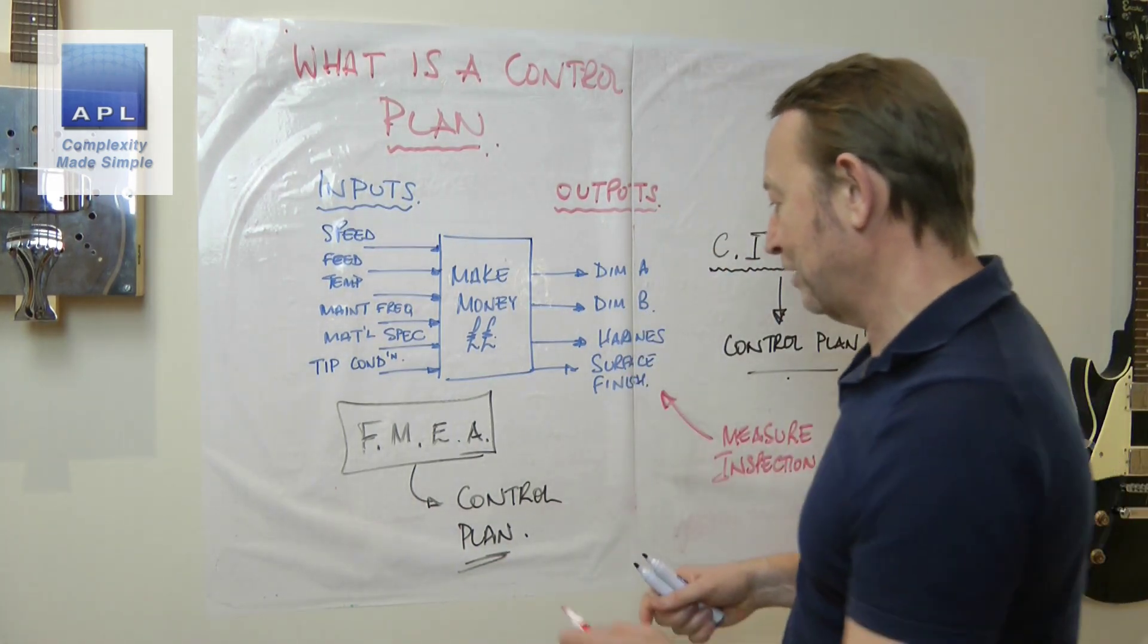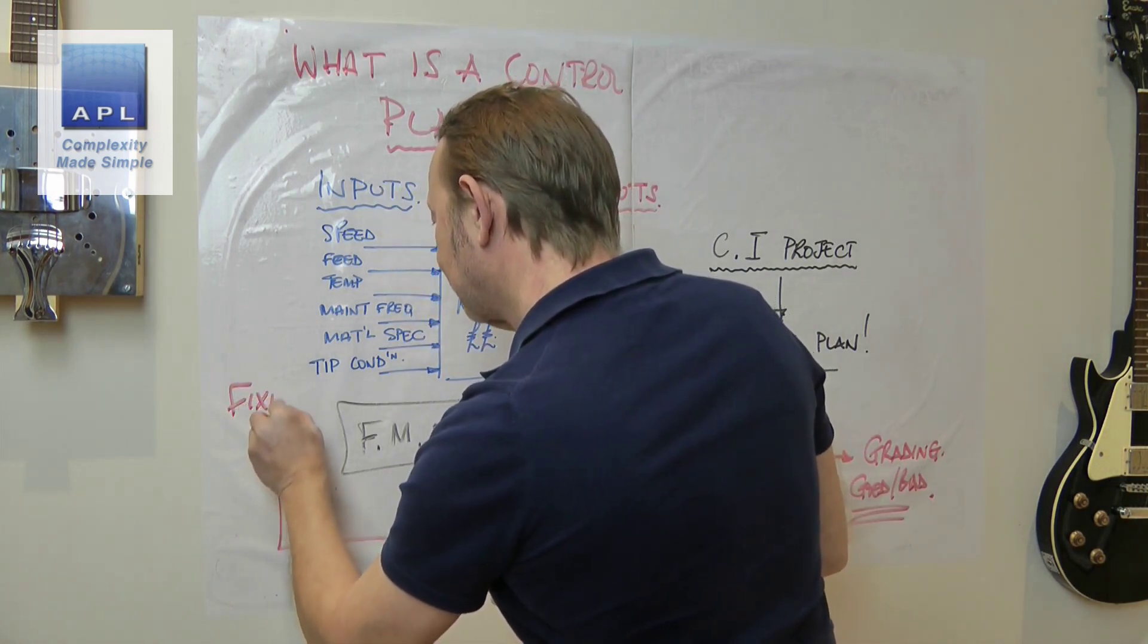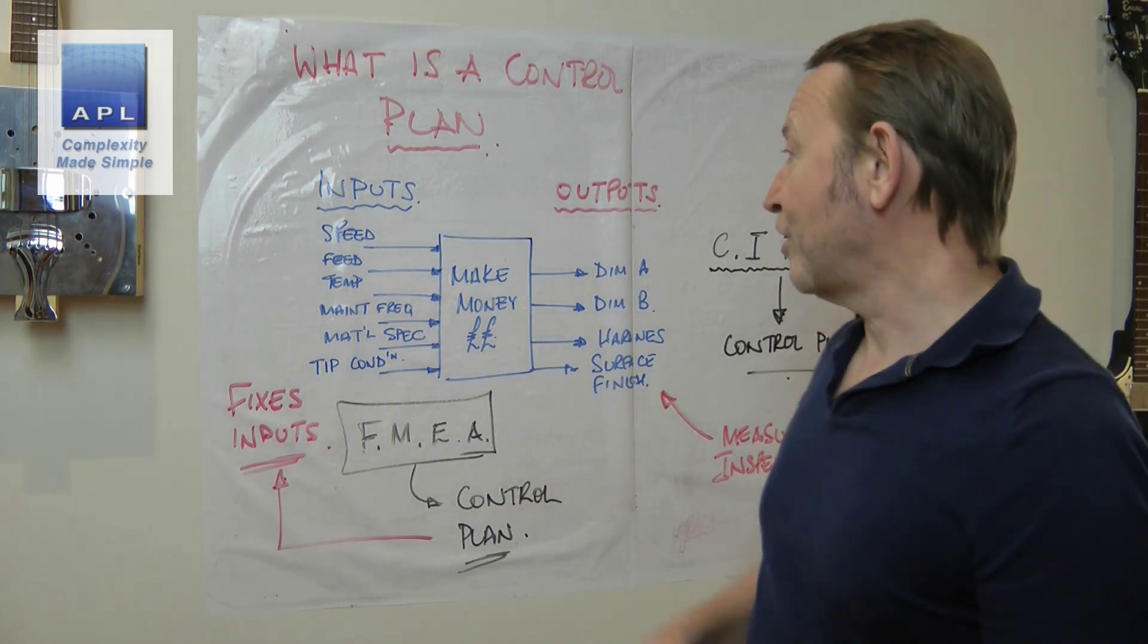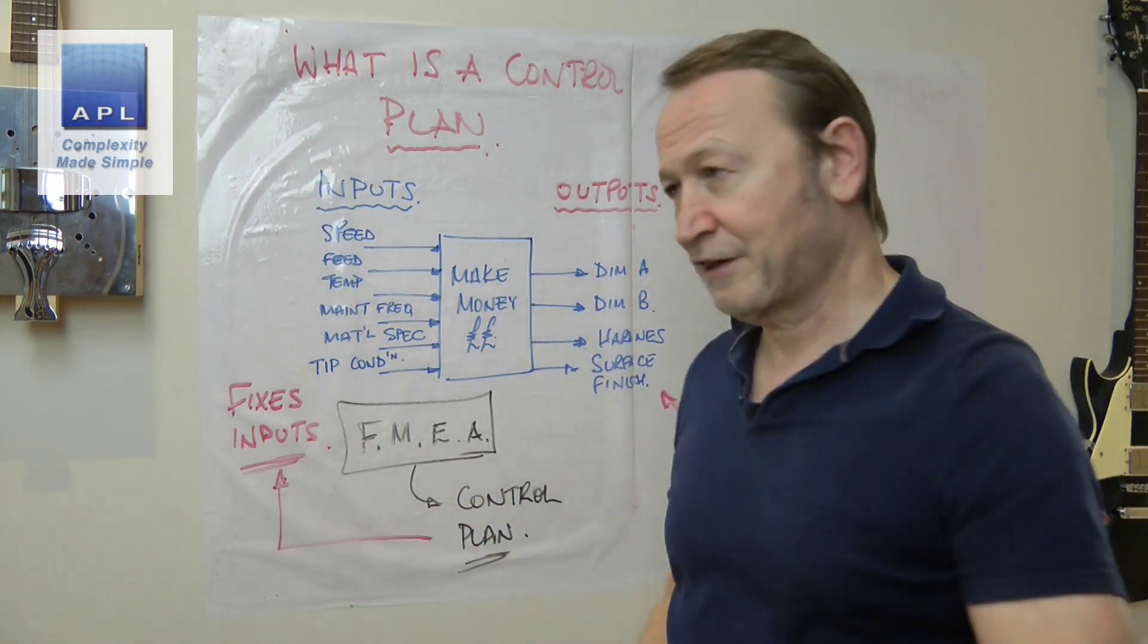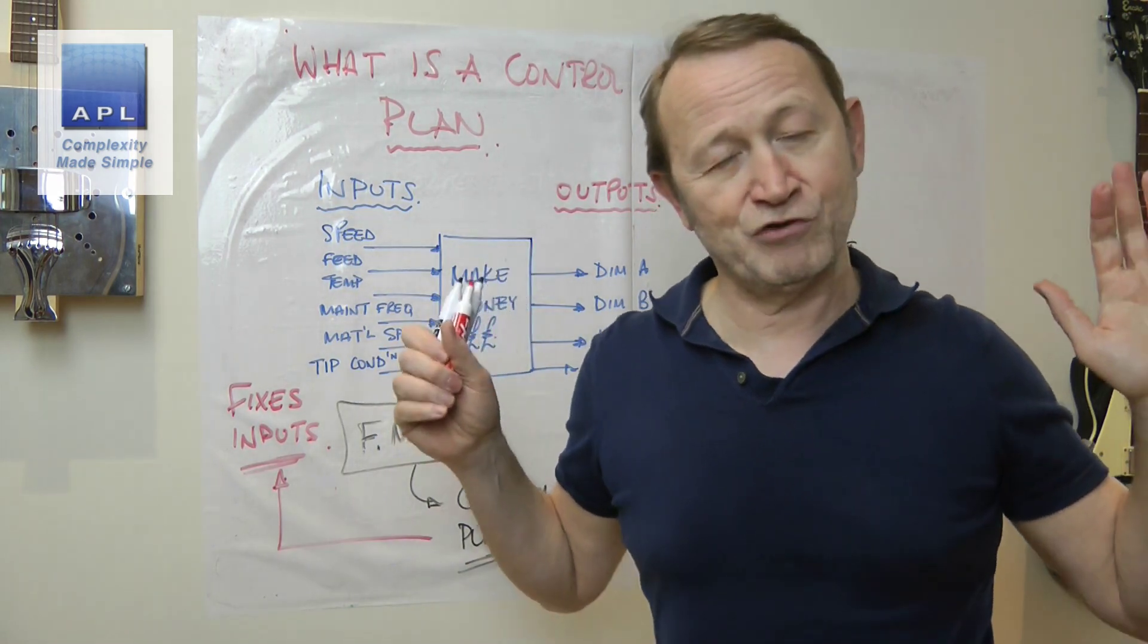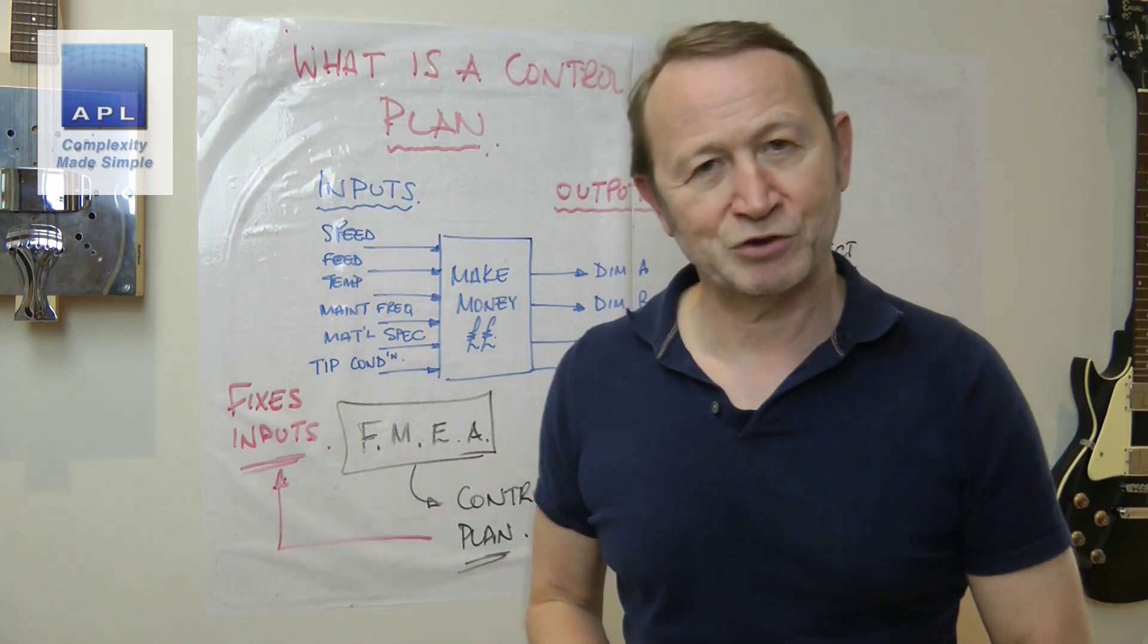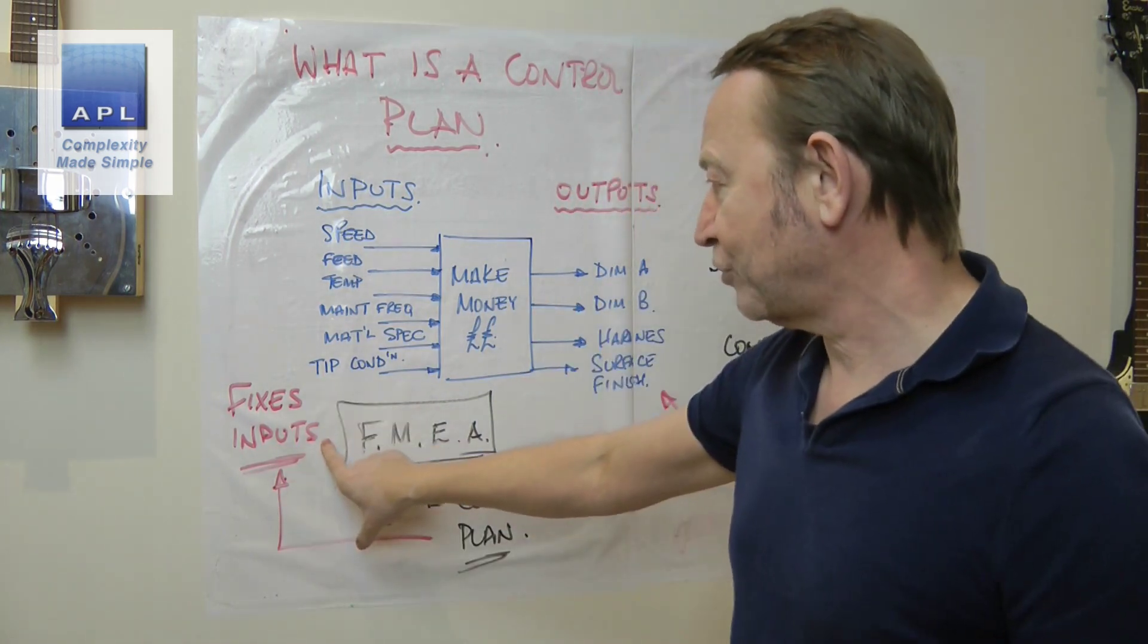So let's talk about what a control plan is and what it isn't. The first thing it isn't is this: if your plan is to measure these, so you're just going to put inspection in place, and then of course what does inspection lead to? It leads to you grading them as good and bad. Now that is a flipping disaster.